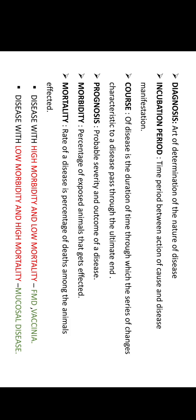The incubation period may vary from a few days to years. In the case of rinderpest, the incubation period is from 4 to 9 days, whereas in chronic diseases such as Johne's disease, it may be up to some years. Course of disease is the time period through which a series of changes characteristic to a particular disease pass through to the ultimate end. Prognosis is nothing but the outcome of a disease.